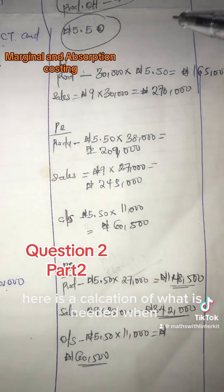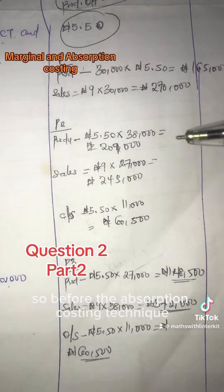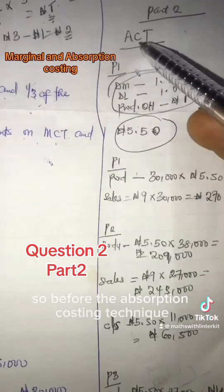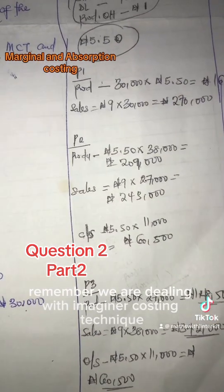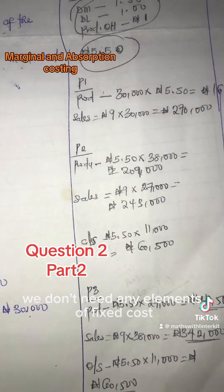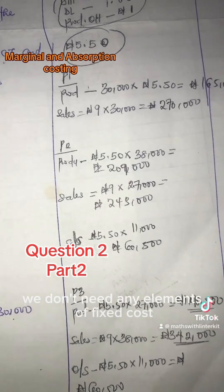Here is a calculation of what is needed when solving for the absorption costing technique. Remember when you are dealing with the marginal costing technique, we don't need any elements of fixed cost.